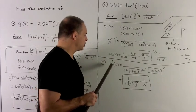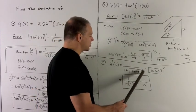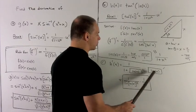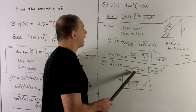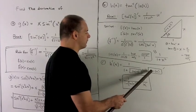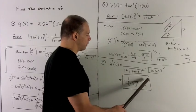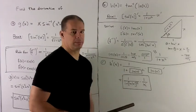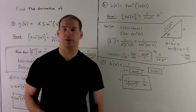Going back to h prime, I place boxes where the argument goes in the formula and substitute natural log of x as the inside. Then multiply by the derivative of natural log, which is 1 over x. We wind up with that expression and leave it as-is, since there's no point simplifying further.